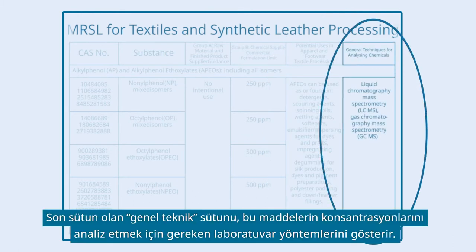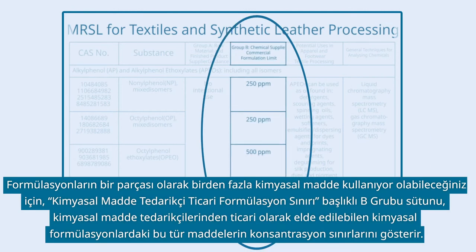The last column, General Technique, indicates the laboratory methods required for analyzing the concentrations of these substances. Since you may use multiple chemical substances as part of formulations, the Group B column — Chemical Supplier Commercial Formulation Limit — shows the concentration limits of such substances in commercially available chemical formulations from chemical suppliers.